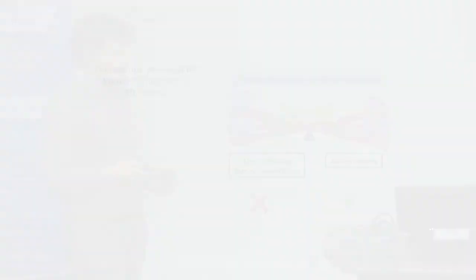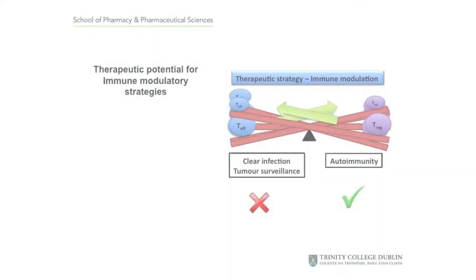If you have an inadequate effector T-cell response, your immune system fails to clear infection and fails to deal with tumors. In contrast, if you have insufficient regulation, your effector T-cells can turn against normal tissue and this results in autoimmunity.